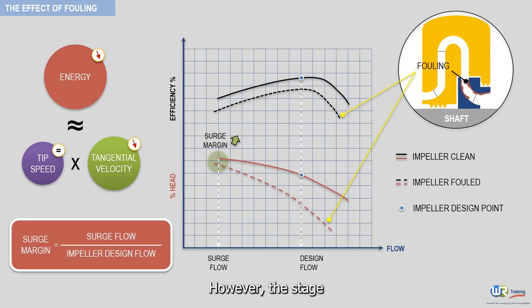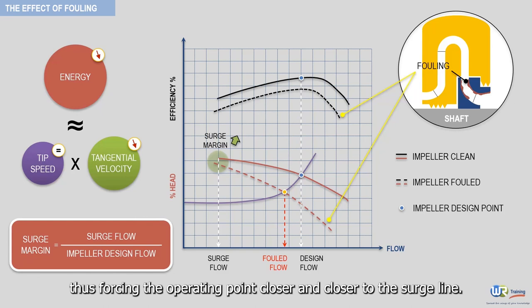However, the stage head produced by the impeller at any flow rate is reduced. Therefore, for the same process system head requirement as depicted in this example, the impeller flow rate will be reduced from the design point to the fouled flow, thus forcing the operating point closer and closer to the surge line.